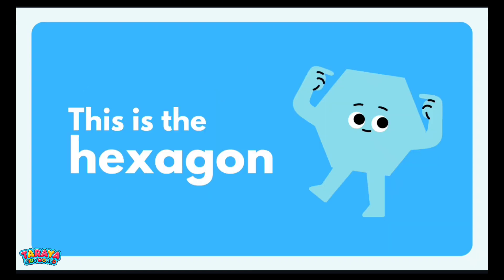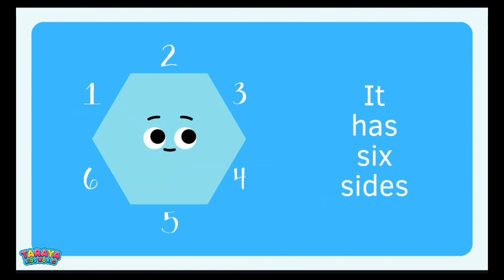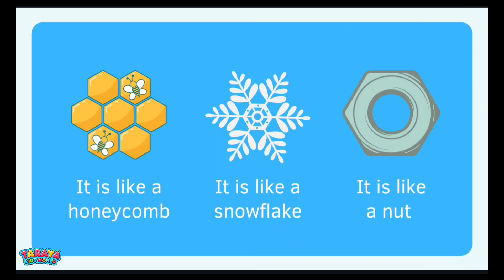This is the hexagon. It has 6 sides. It is like a honeycomb. It is like a snowflake. And it is like a knot.